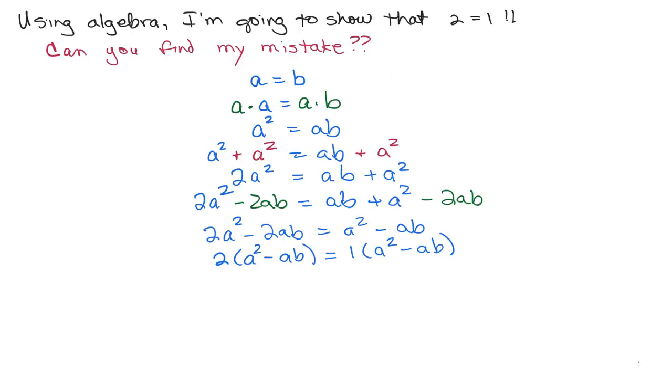So I'm just going to divide both sides by that factor. If I divide both sides by A squared minus AB, then I could cancel those. I can cancel this, and over here, I can cancel this. And so I have, oh, I have 2 equals 1.